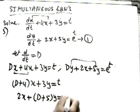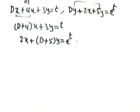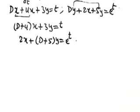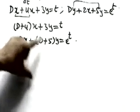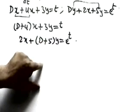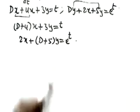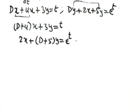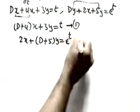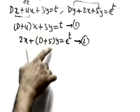Taking y common gives 2x + (D + 5)y = e^t. Now we have to solve these two equations and eliminate either x or y to get an equation in terms of one variable. Suppose we first solve for y, then substitute to get x, or vice versa. Let's call these equation 1 and equation 2; we will eliminate y.